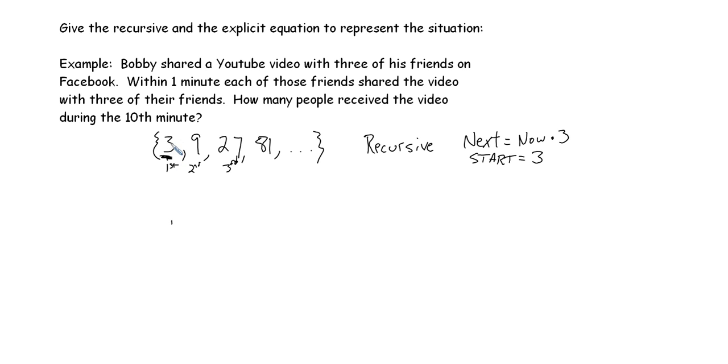What we have now is this is going to be three to the first power. This is going to be three to the second power, which is nine, three to the third power. Since we're multiplying by three each time in this sequence, each successive one has another three multiplied with it. This is one three multiplied together. This is two threes multiplied together. This is three threes multiplied together. So the nth element of this function, or f of n, would be three to the n power. So here we have the explicit function.